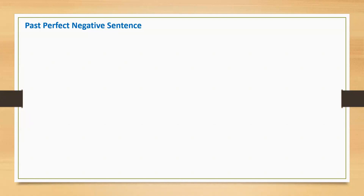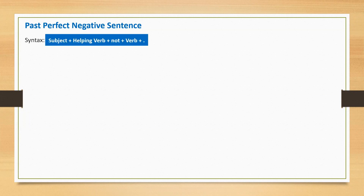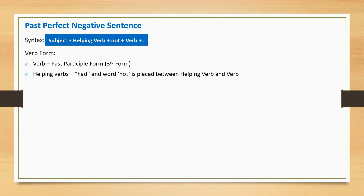Past perfect negative sentence — a statement with the word 'not' is called a negative sentence or pessimistic statement. Let's understand the rule. It starts with subject, followed by helping verb, the word 'not', main verb, and a full stop at the end. The past participle form of the main verb is used, and the helping verb 'had' is applicable. The word 'not' is placed between the helping verb and the main verb.